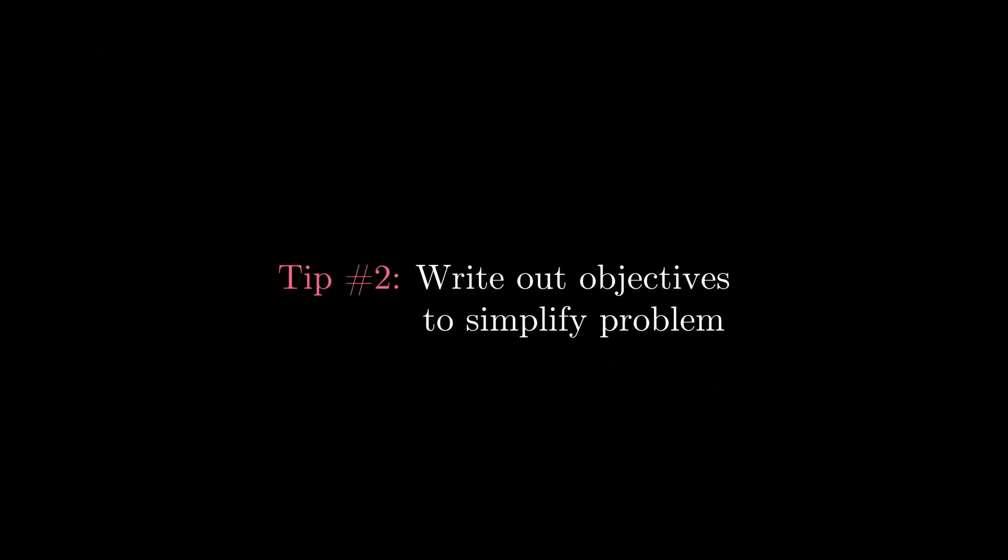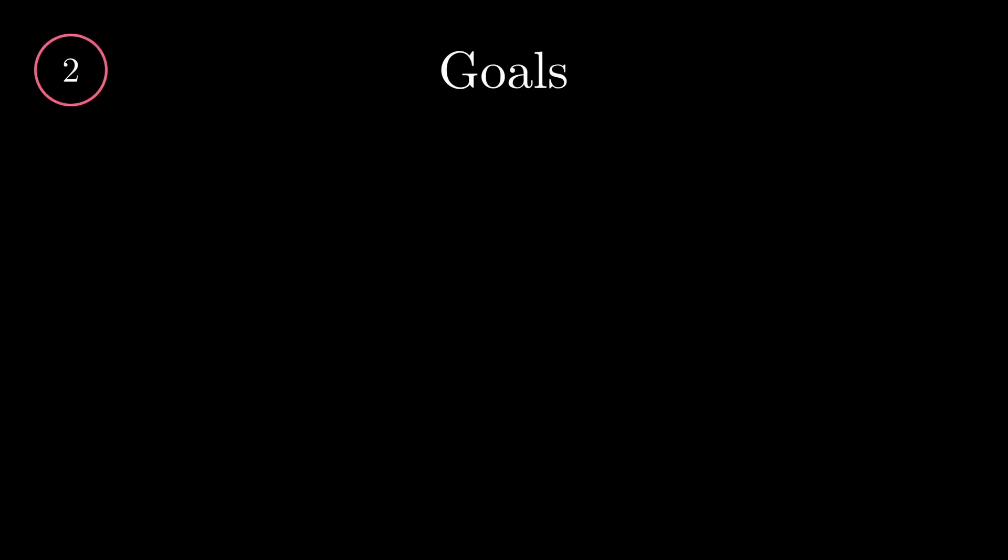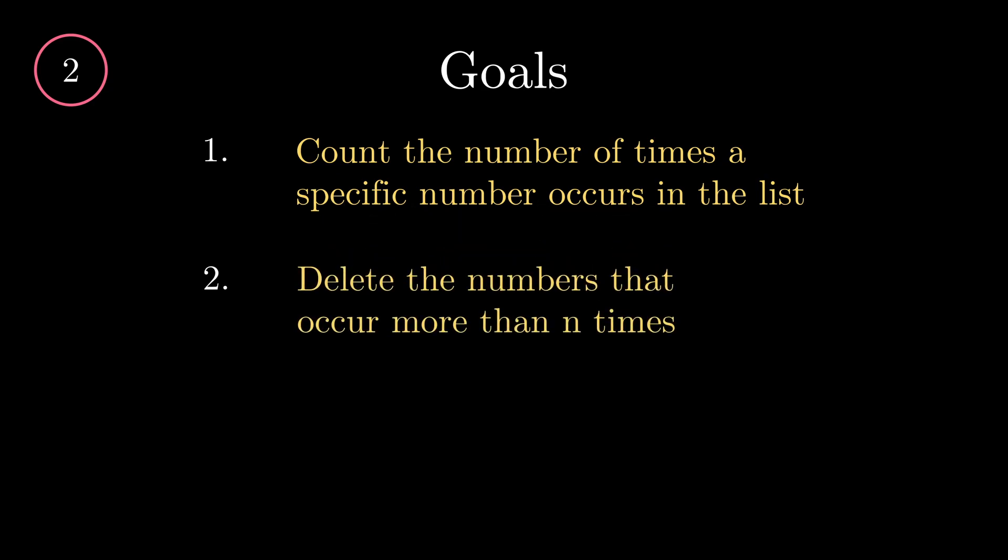Moving on to tip number 2: Write out your desired objectives to simplify the problem. In the case of this task, we can summarize it into three concise goals. Firstly, count the number of times a specific number occurs in the list. Secondly, delete the numbers that occur more than n times and finally, simply return the updated list.